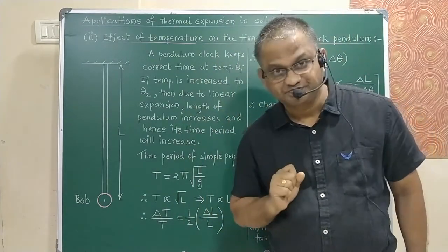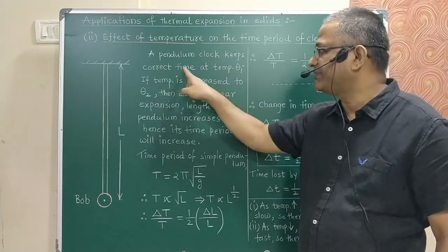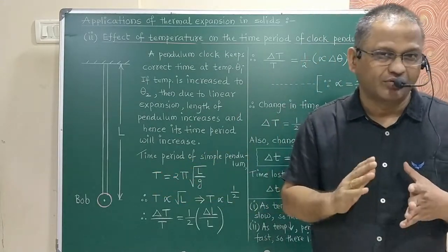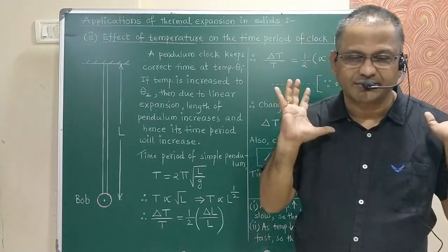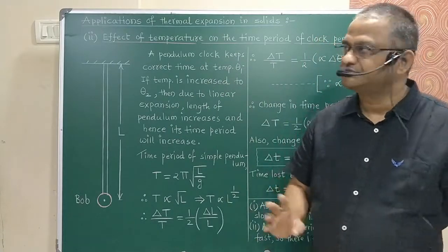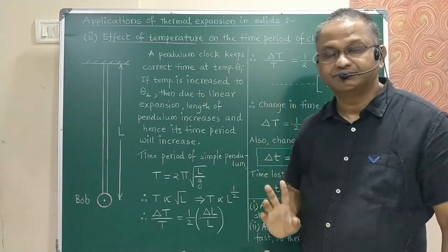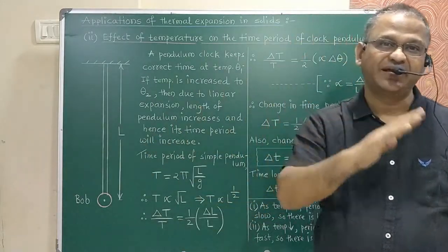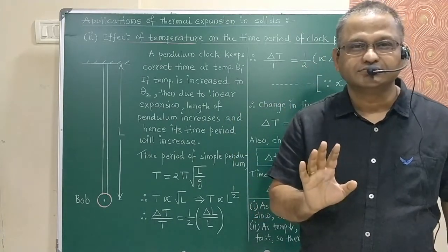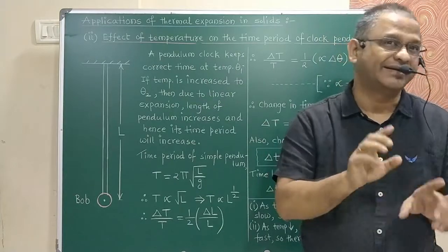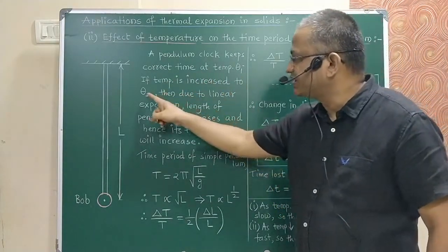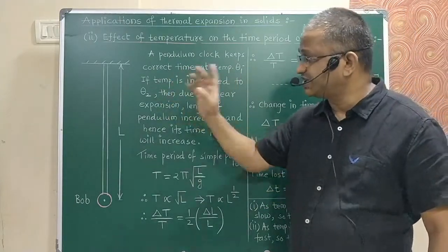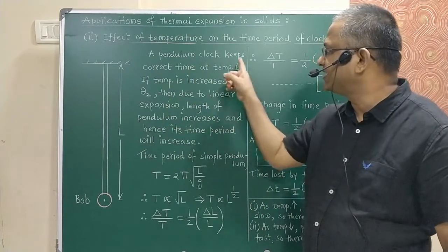Suppose the pendulum clock keeps correct time at temperature theta-1. This means the clock is neither running fast nor slow at that temperature. Now if the temperature changes — either increases or decreases — consider the case where temperature increases to theta-2. The rise in temperature is delta-theta = theta-2 minus theta-1.